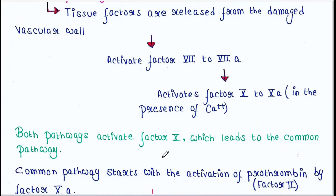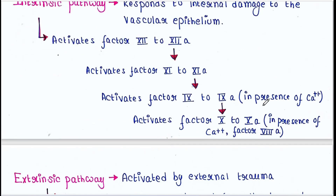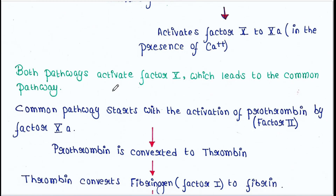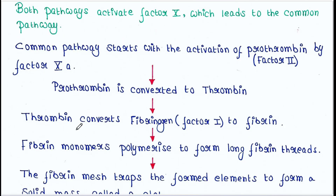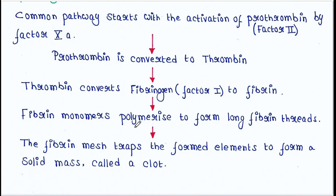That means both the intrinsic as well as extrinsic pathways activate factor 10, which leads to the common pathway. The common pathway starts with the activation of prothrombin — also called factor 2 — by factor 10A. Prothrombin is converted to thrombin, and thrombin converts fibrinogen, or factor 1, to fibrin.